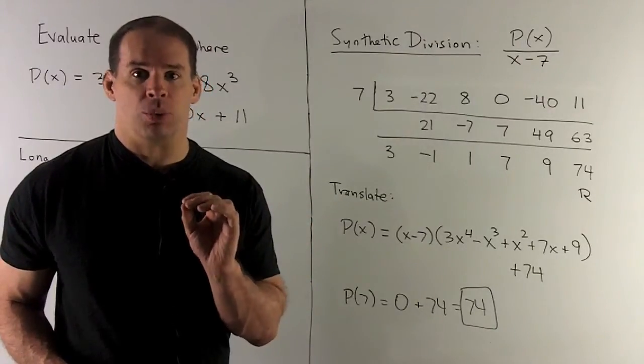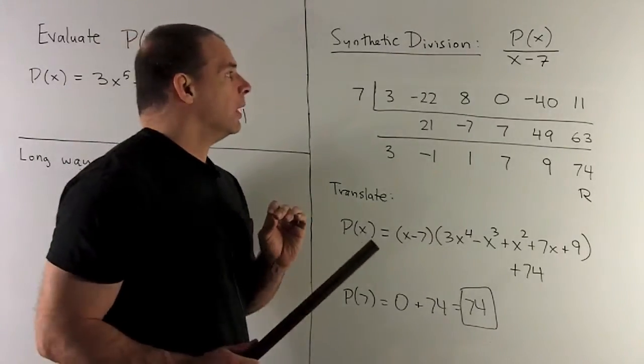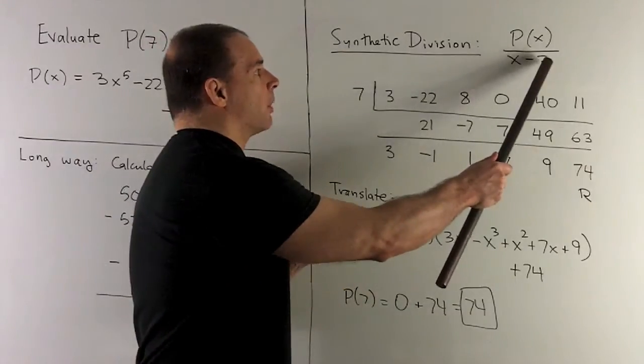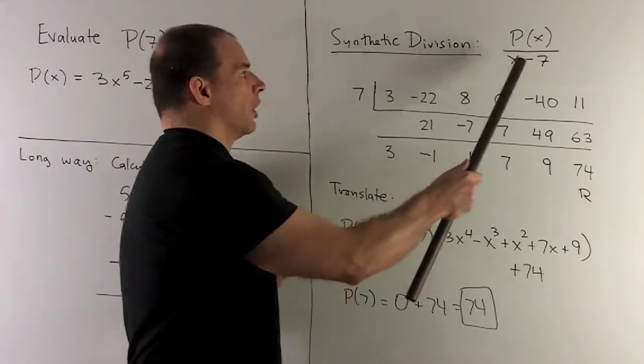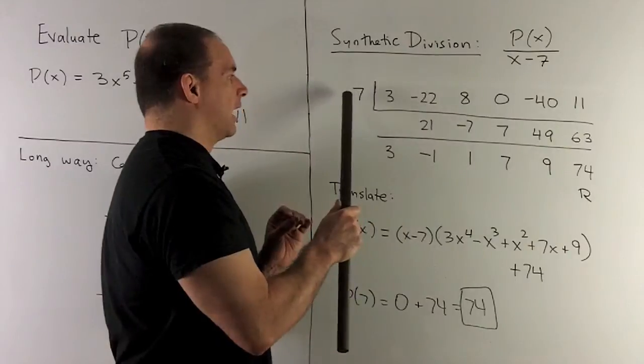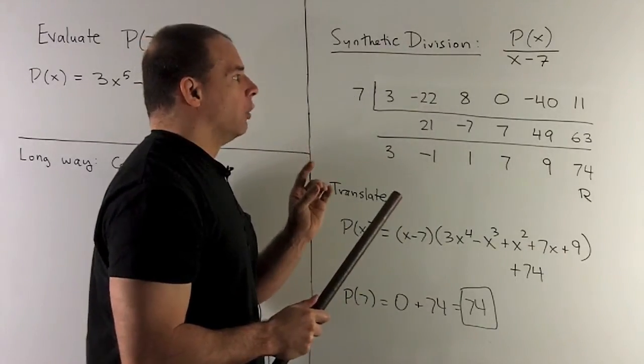So how's synthetic division work? So what are we going to do? We're going to take X minus your number, put your number here. So if this was a positive, I have to put a negative number here.